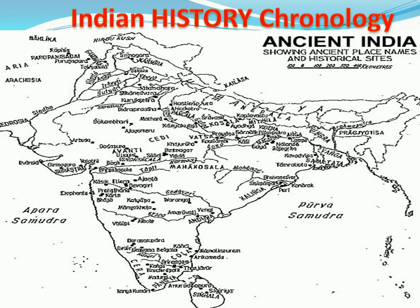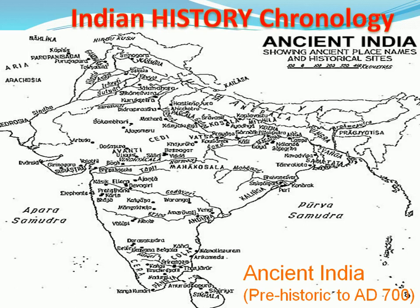Yeh ek map hai ancient India ka, jismein agar baat karein to dekhenge — Purva Samudra, Apara Samudra, Chedi, Kalinga, aur Kashmir. Yeh kuch important sites hain jo hamare prehistoric era ko denote karti hain. Iska jo time tha, that was prehistoric to 700 AD, jo hamaari ancient history cover hoti hai — jab se Earth bani hai ya thandi hui hai, tab se lekar 700 AD tak.